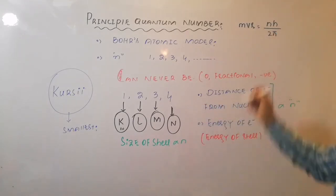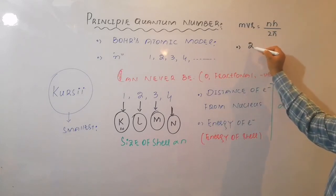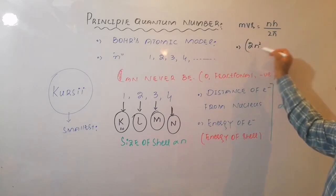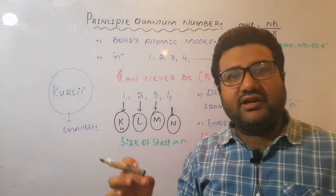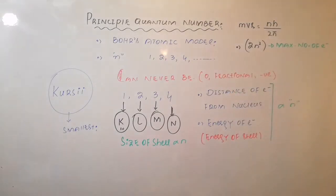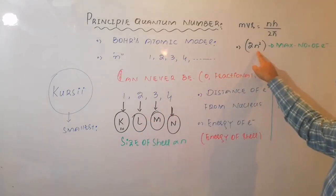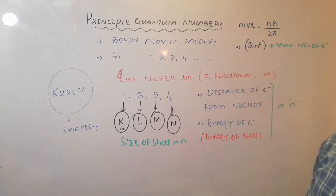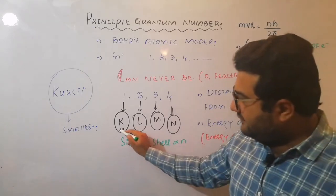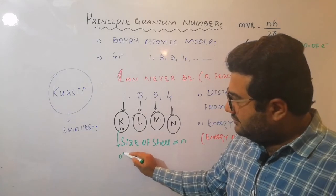Now next, there is a formula which is very important: 2n². This 2n² gives us information about the maximum number of electrons that can be accommodated in a shell. So for K, n is 1. If we put the value of 1 here, 1² is 1 times 2, it means K shell can have a maximum of 2 electrons.